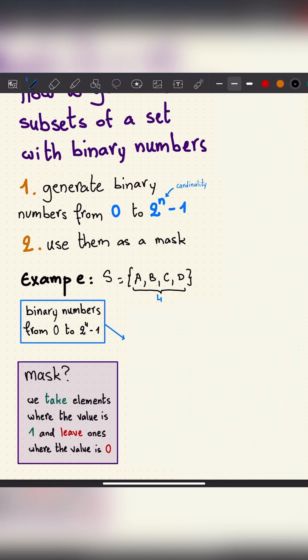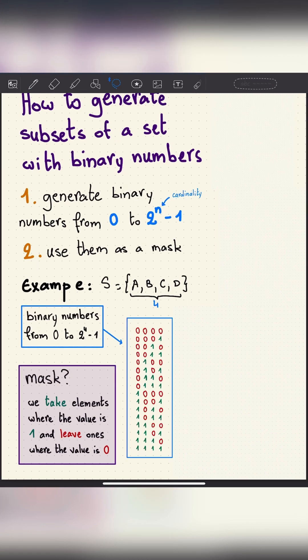need to take binary numbers from 0 to 2^4 - 1, which is 15. Here they are—we have 16 numbers in total. Now we just use them as a mask on our set, and here is